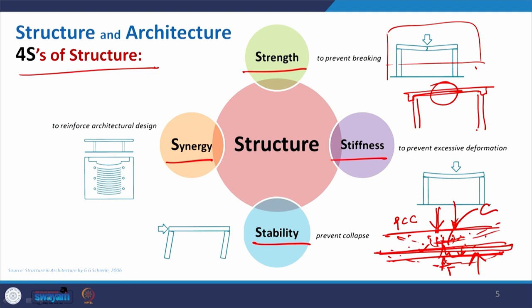We will discuss this with some experiments later. To make a structure stronger, we may look for some combination of different structural materials. Stiffness is the property that prevents excessive deformation. If a structure lacks stiffness, it will deform, and high deformation is not a good sign because the supported structure on the columns may then act in a different manner. So stiffness is another very important property in selecting a structure.